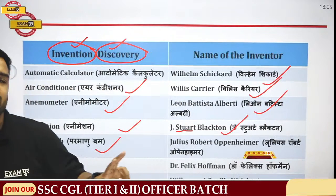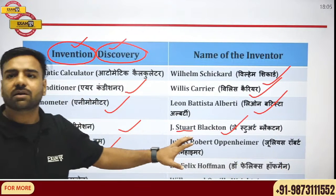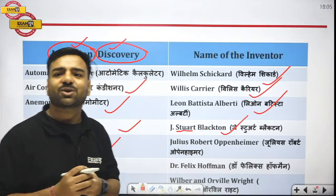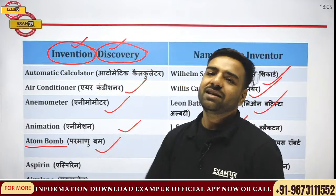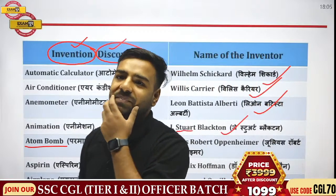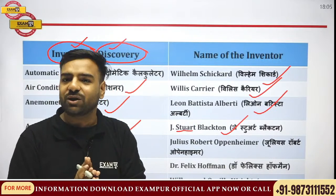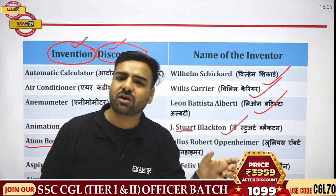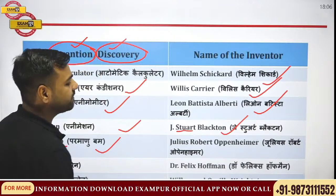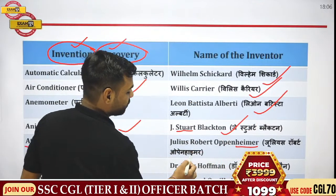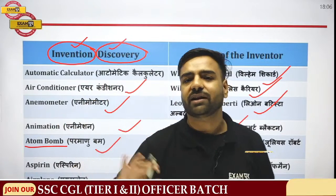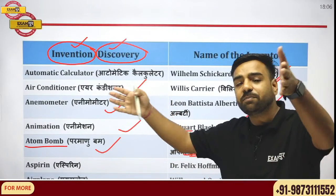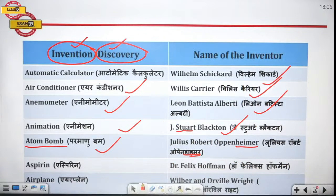Next comes the Atom Bomb. Who discovered the Atom Bomb? It was Oppenheimer — Julius Robert Oppenheimer. Here is a trick: if the atom bomb explodes, people will die. In Hindi we say 'log mar jayenge.' You can break his name as 'Open-high-mar' — Oppenheimer. So from 'high mar' you can remember his name in the examination.